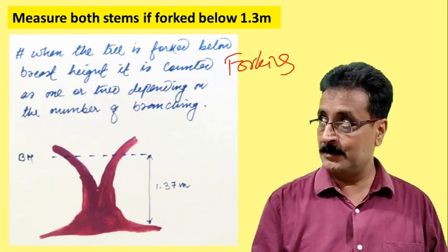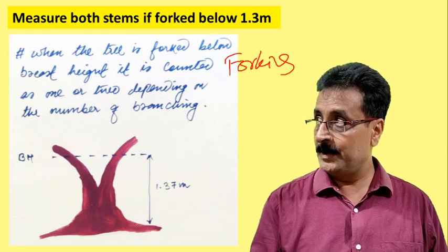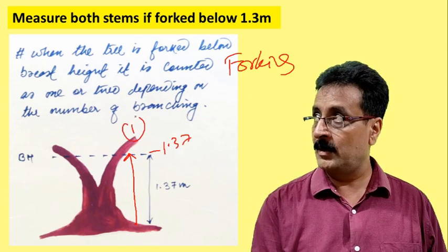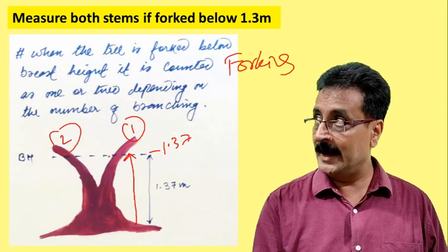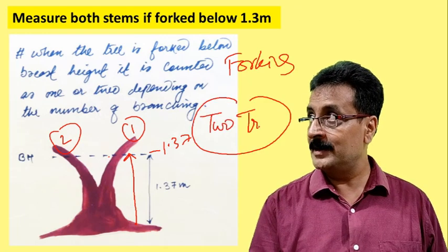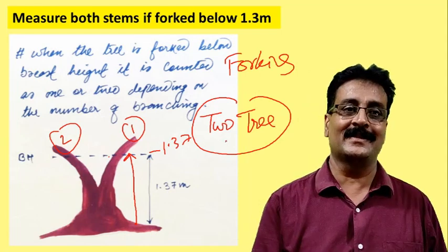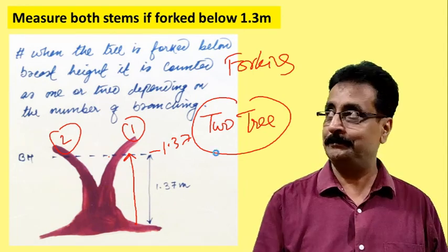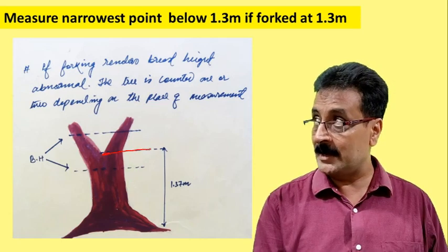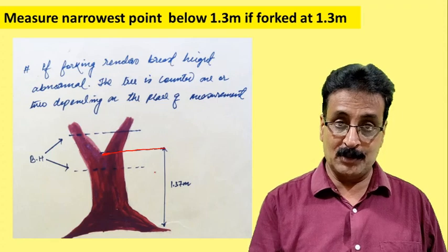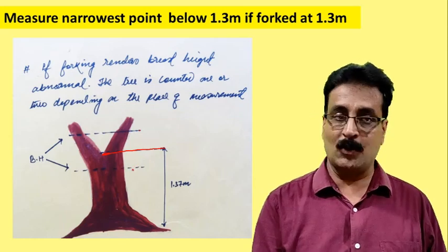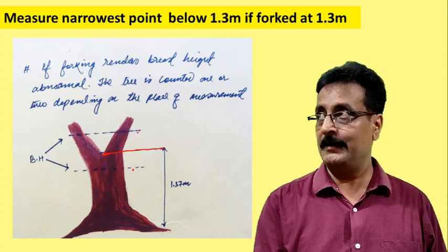The next case is forking. When a tree forks, and the fork occurs at or below 1.37 meters, you must consider it as two trees. You take two separate diameters — one for each stem. If the fork comes exactly at 1.37 meters, the general practice is to measure just below the fork and consider it as one tree.